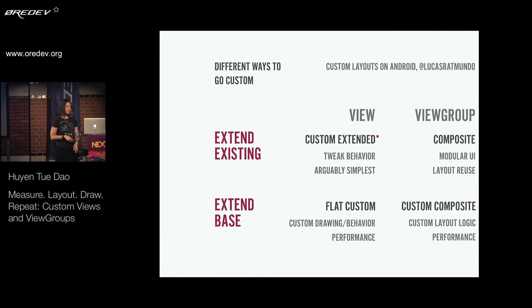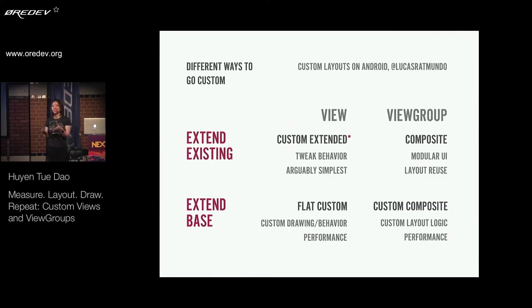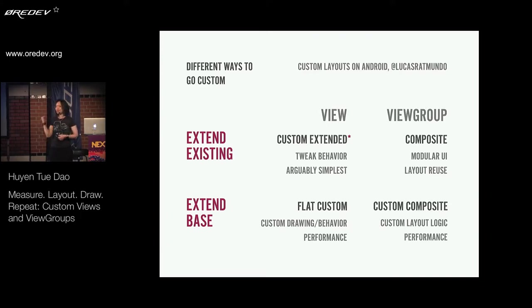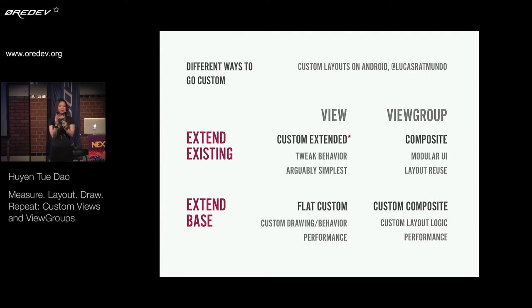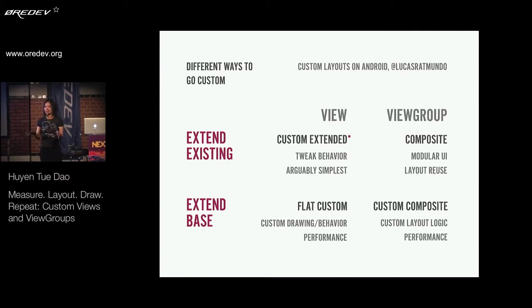So that's how Android draws views. So what can we do with this whole process? There are a lot of different ways to make custom views. There's a really great blog post written by Lucas Rocha, who works at Facebook, and he names three of his favorite types of custom views and view groups. I added one for myself. I'm going to categorize them by both the thing you're extending and the class you're extending from. If we're talking about views — just plain old views, things that don't have children — the most basic and easiest way to get into custom views is actually just extending an existing widget or component like TextView, ImageView, and things like that.